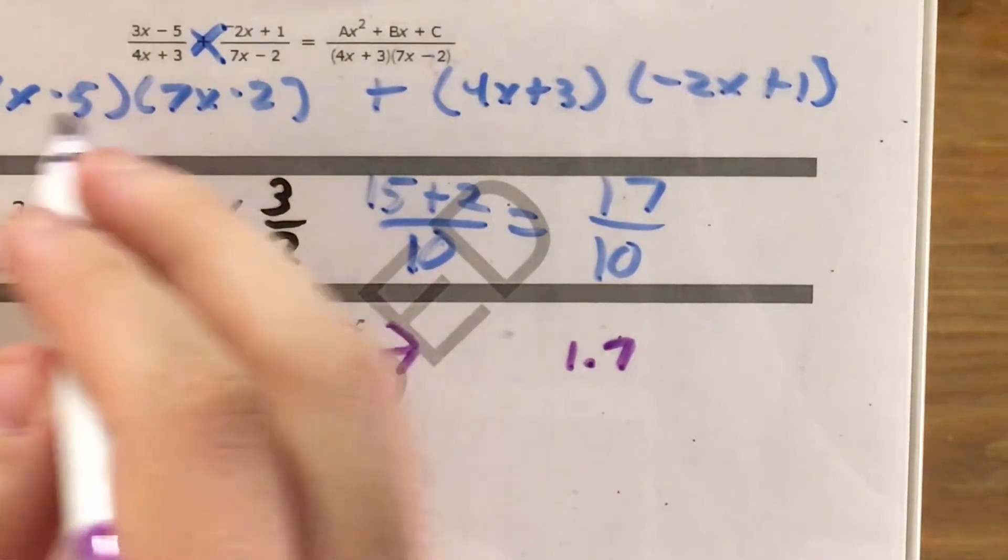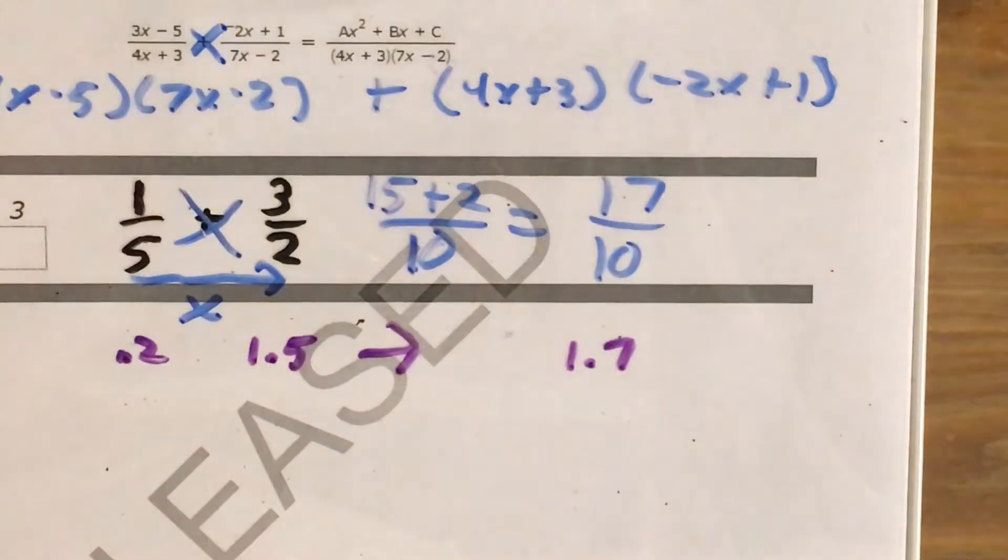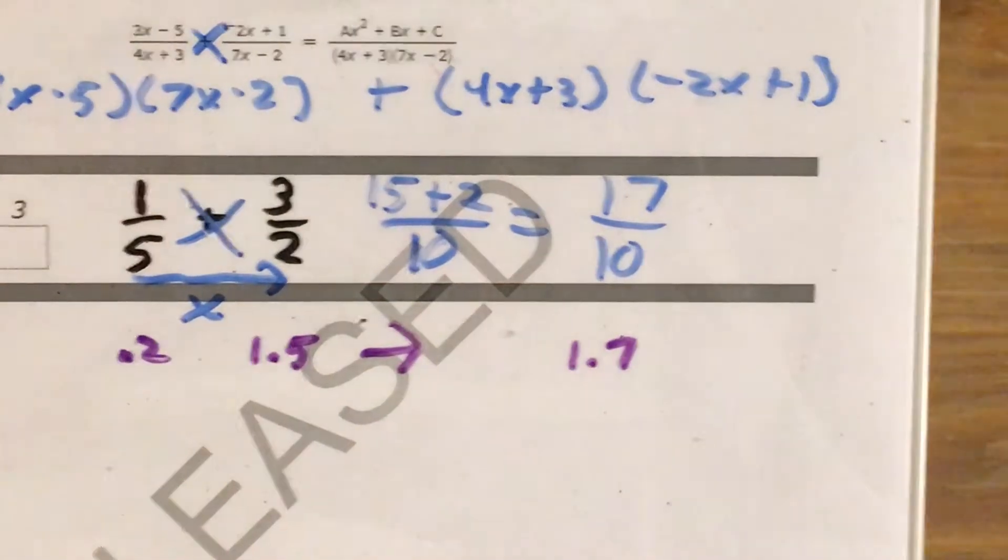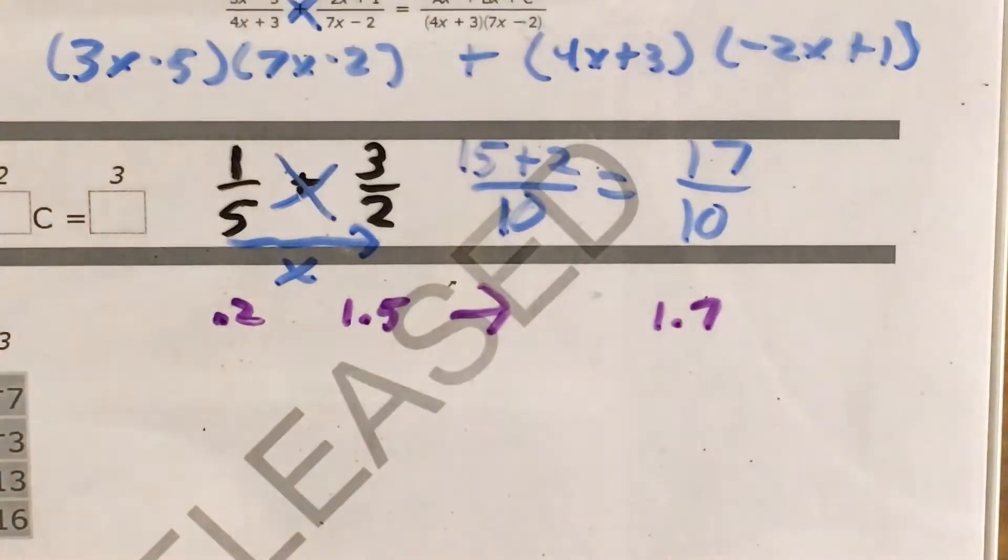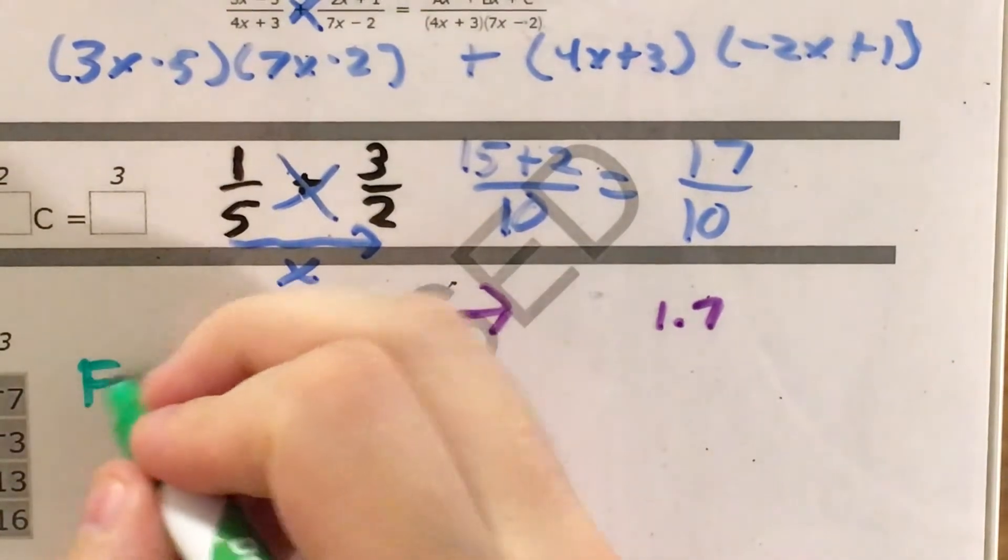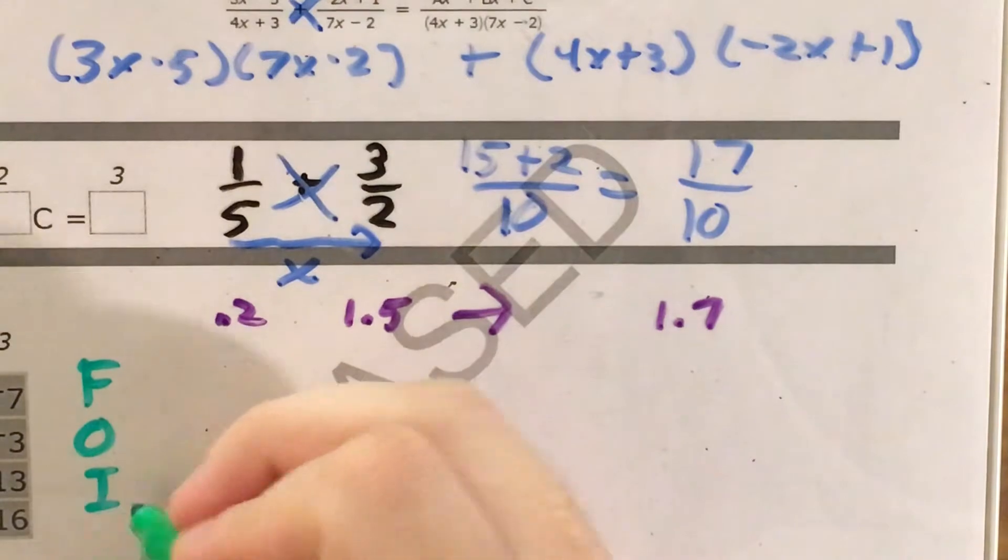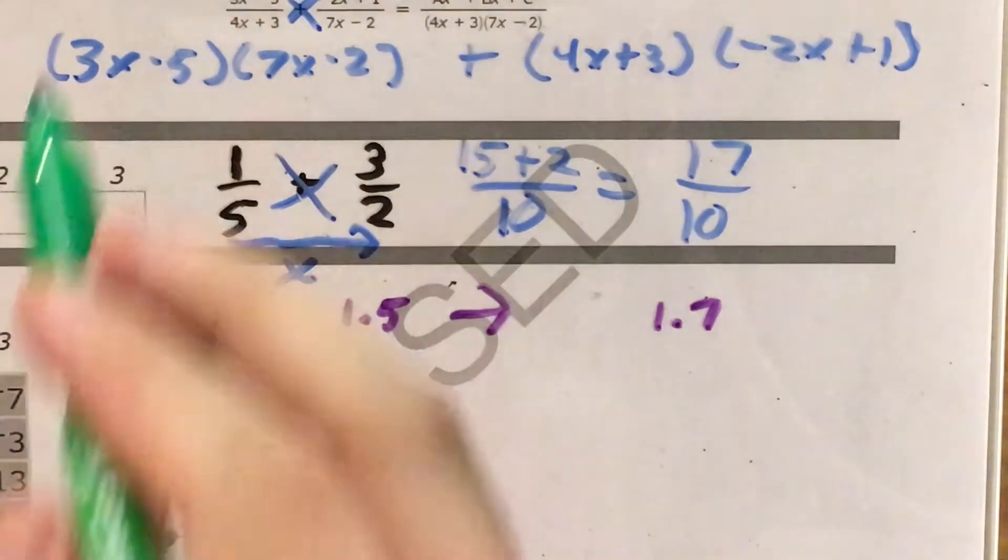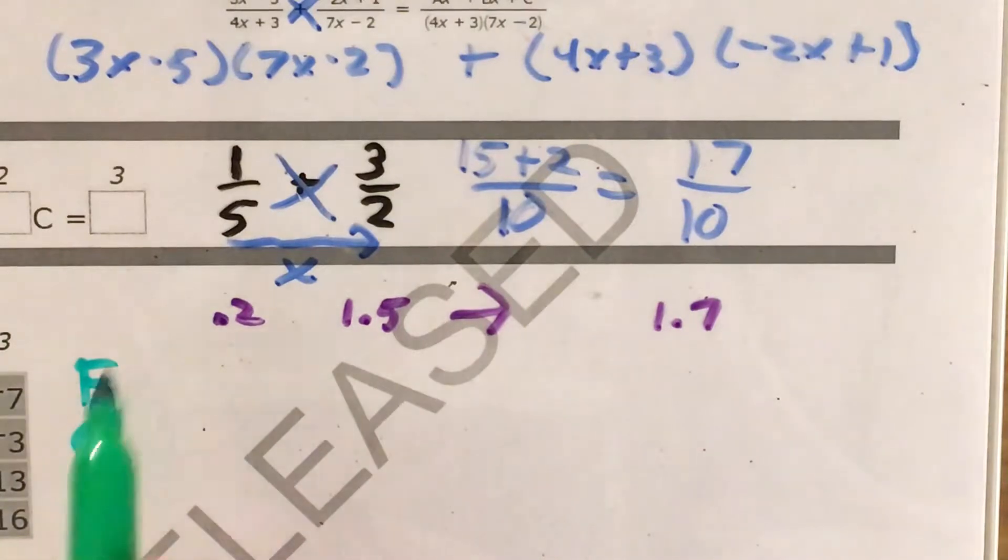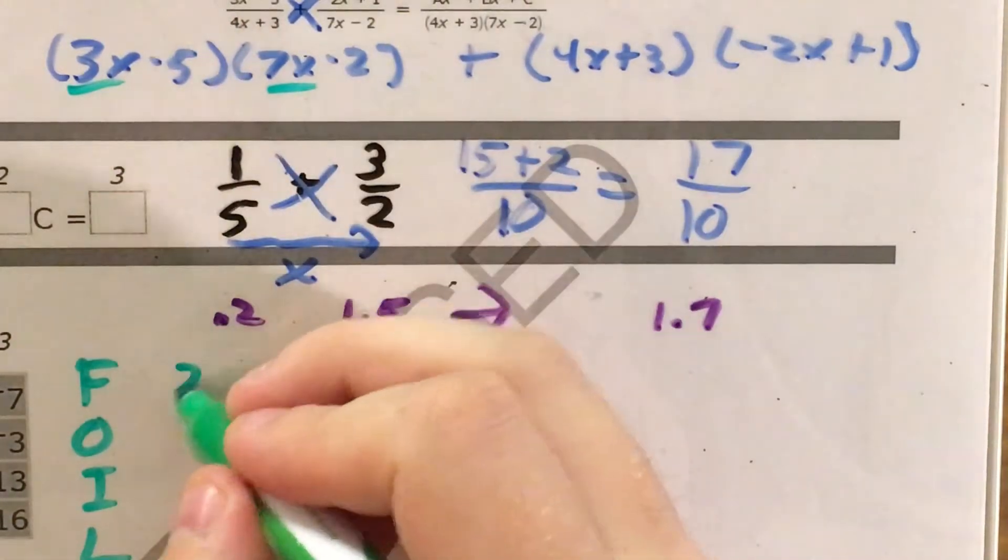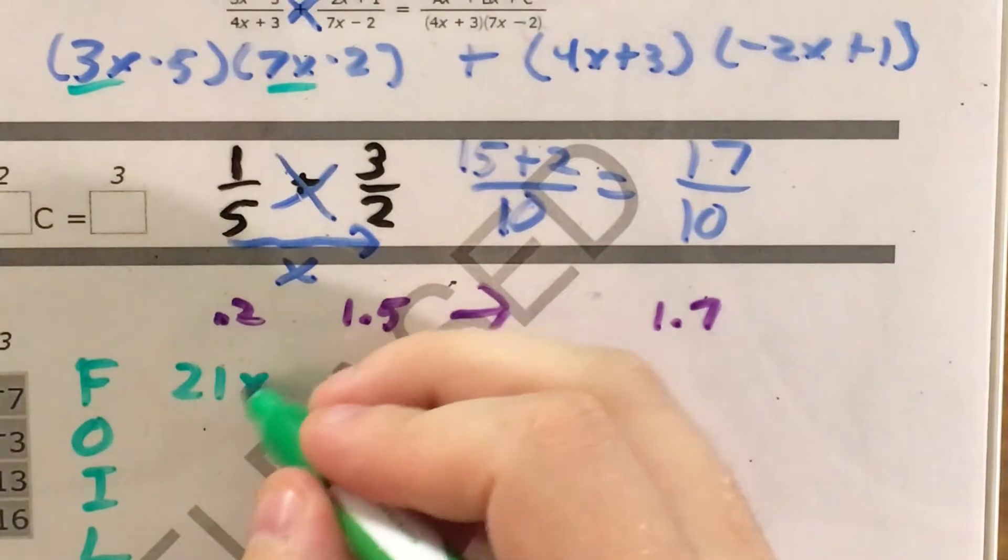At this point, I have binomials that need to be multiplied together, and you might have already guessed that that means I have to use foil. First, outside, inside, last. So in the example of 3x minus 5 times 7x minus 2, for f, which means first, I multiply 3x by 7x. 3 times 7 is 21. x times x get me x squared.